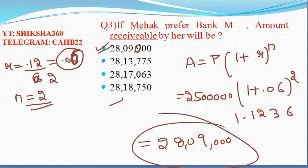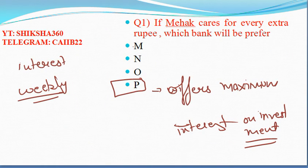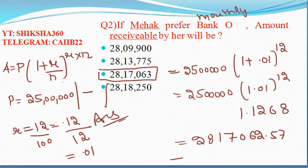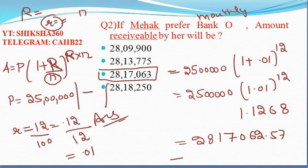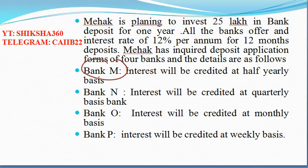To summarize the formula: A = P(1 + r)^n, where r is the rate of interest calculated as per the terms and conditions, and n is the number of times the interest is compounded. This is the effective rate of interest formula. Now let's move to question number four.